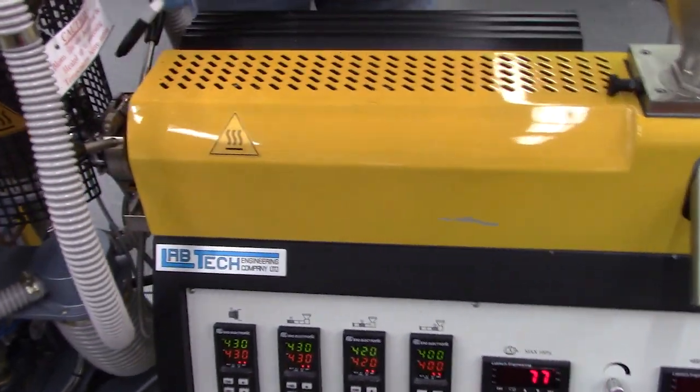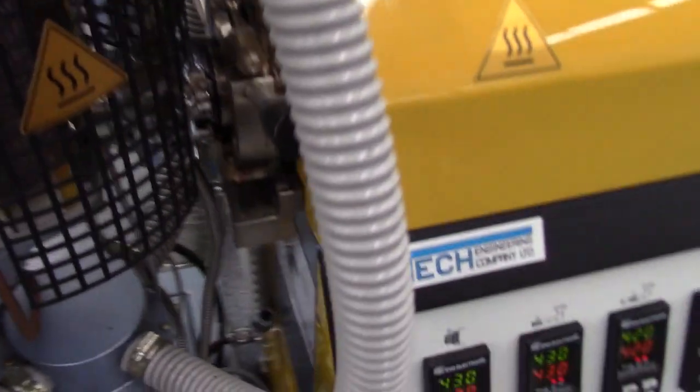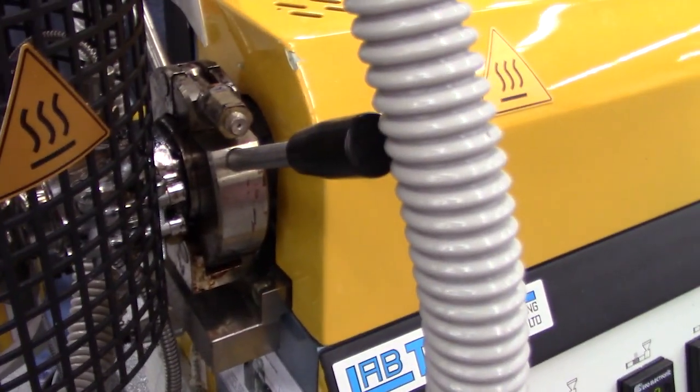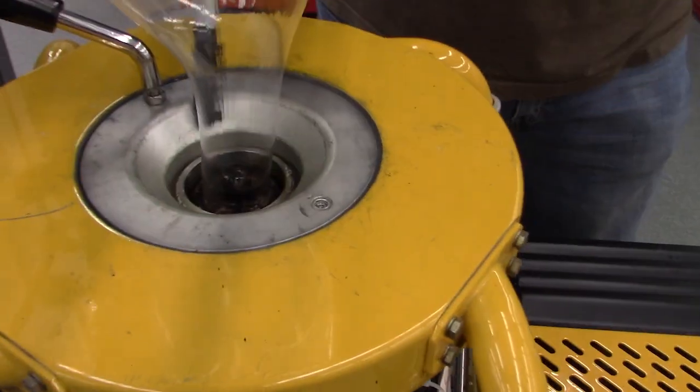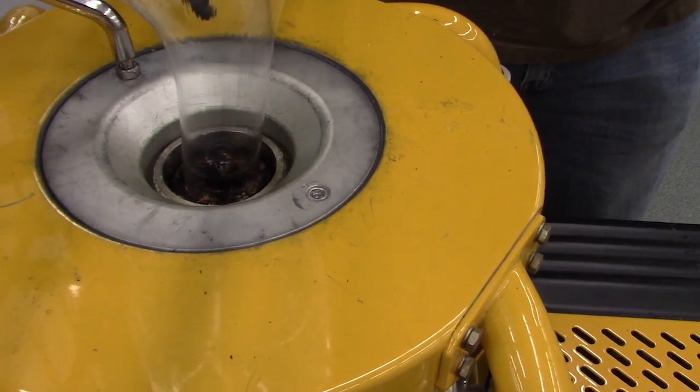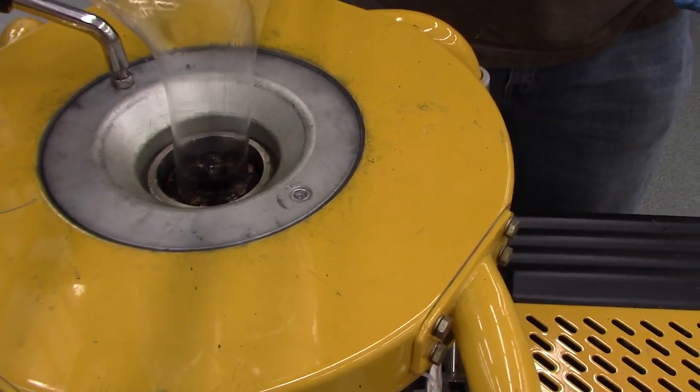We have a crosshead die that takes the flow and rotates it 90 degrees upward, an annular die that makes a hollow tube. On the outside of the tube we have an external air ring that's cooling the film down. You can see the frost line.